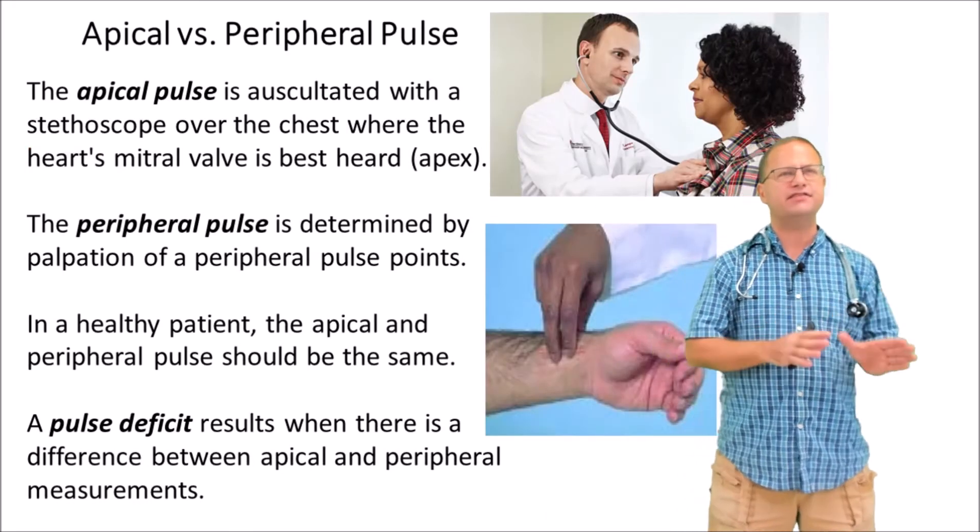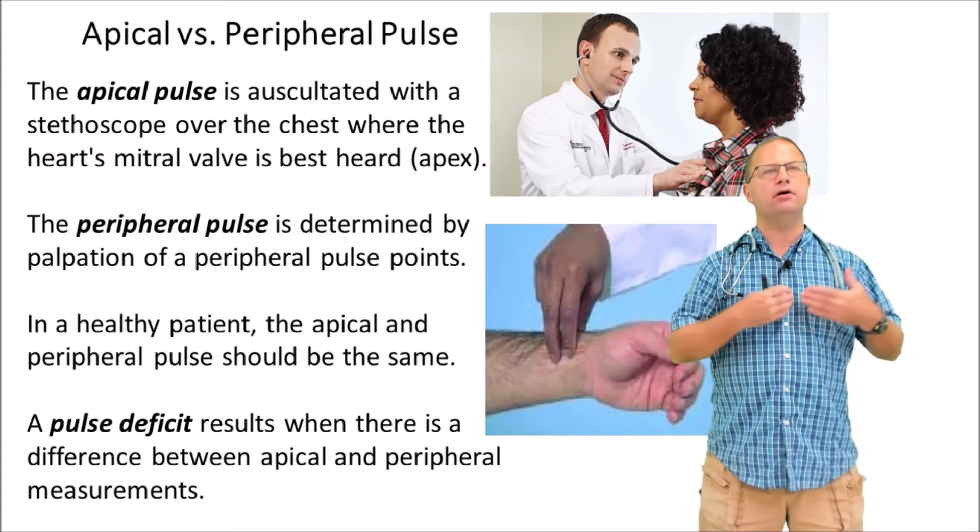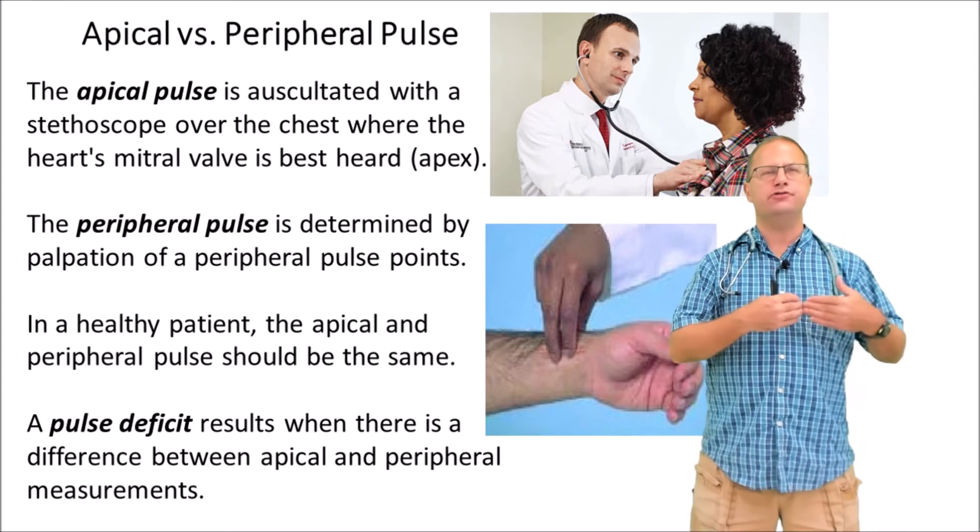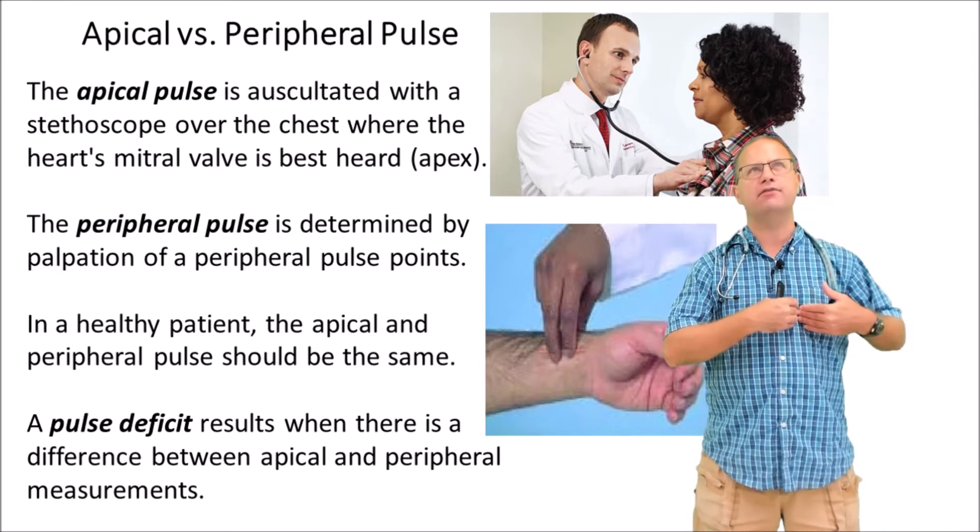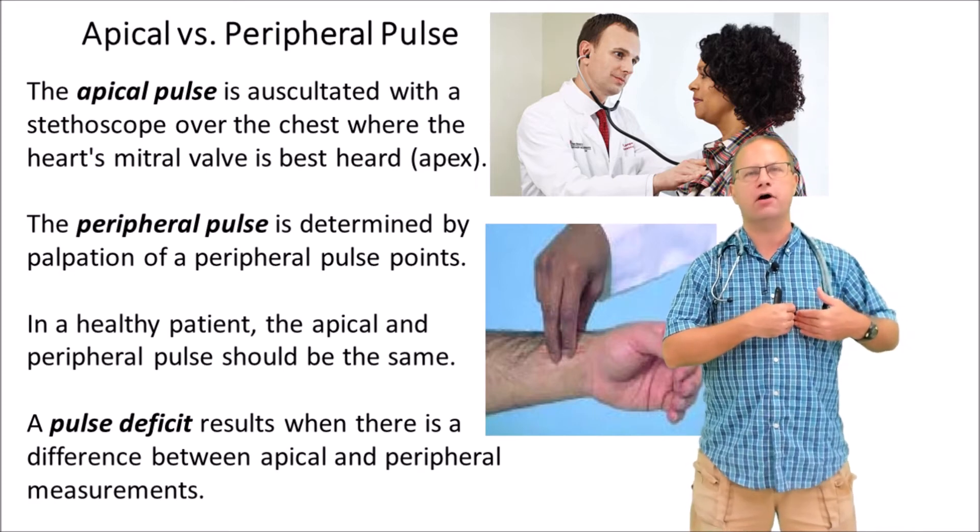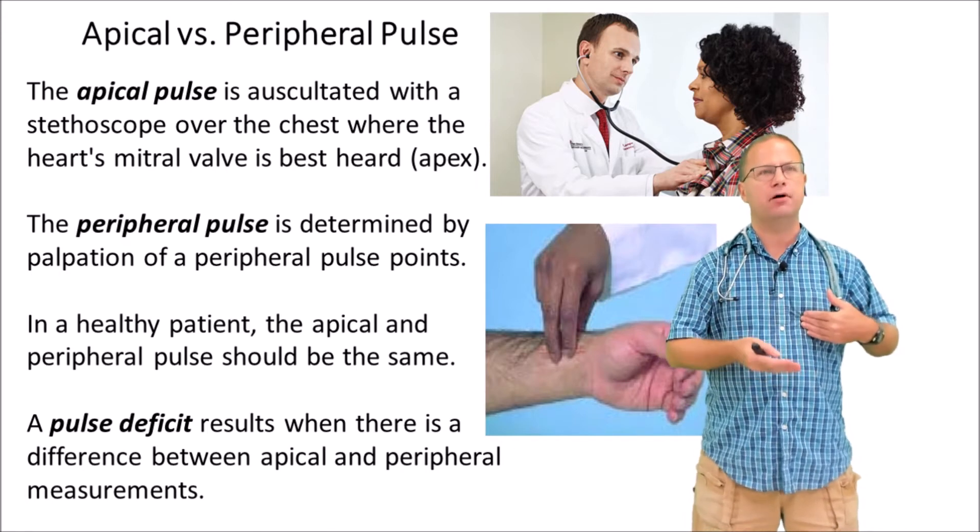We need to discuss the apical versus the peripheral pulse. An apical pulse is measured over the heart, usually using a stethoscope. We place the stethoscope at the area of maximal intensity of the closure of the mitral valve around the apex of the heart and listen for how many heartbeats we hear per minute.